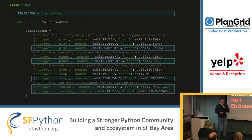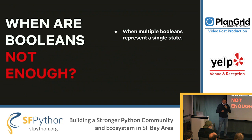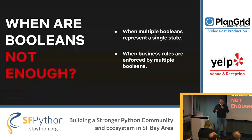So when are booleans not enough? When you have multiple booleans representing a single state — if you find yourself checking multiple booleans or multiple attributes in order to decide the state of an object, you're probably doing something wrong. And when business rules are enforced by multiple booleans — if you have to check a lot of variables to decide if an object can perform a certain action — there's got to be a better way.